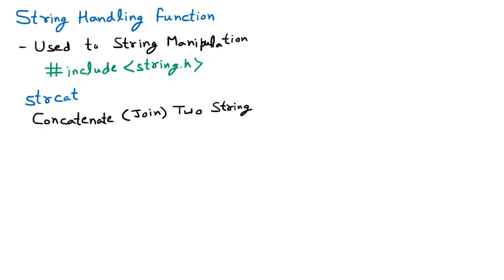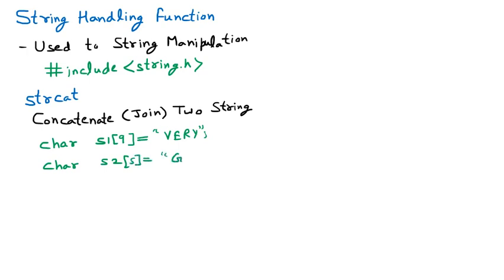We declare a character array `char s1[9]` initialized to `"very"`, and another `char s2[5]` initialized to `"good"`. Then we call `strcat(s1, s2)` — string concatenation of s1 and s2. Let's see what happens using a diagrammatic representation.